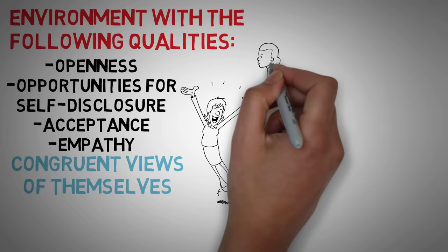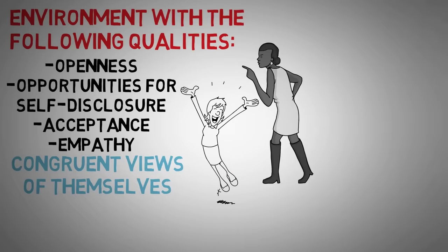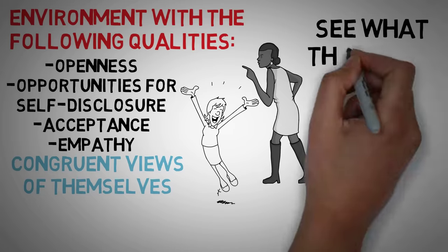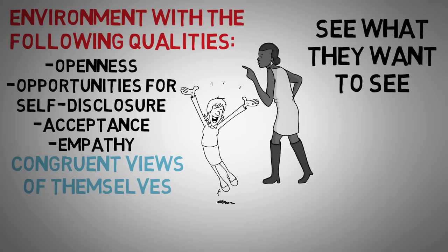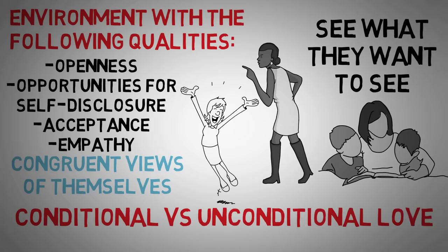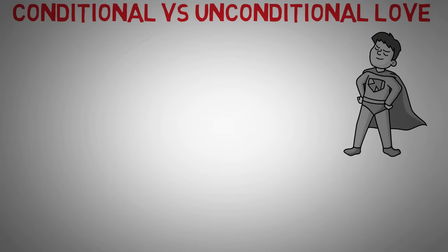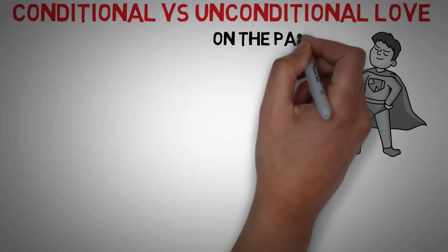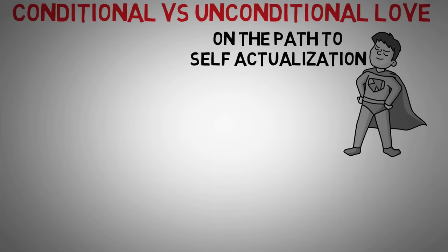Conversely, if someone grew up in a more hostile or negative environment, they're more likely to only see the things that they want to see. Rogers uses the example of parents showing conditional and unconditional love. When children grow up in a household with unconditional love, they were more likely to hold congruent views of themselves and actually be on a better path towards self-actualization.